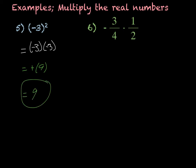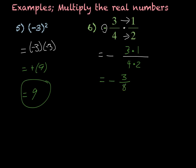For this next problem, we have negative 3 fourths times 1 half. Since there is an odd number of negative signs, my final answer is going to be negative. Multiplying two fractions, I multiply straight across: 3 times 1 over 4 times 2. 3 times 1 is 3, and 4 times 2 is 8, giving me negative 3 eighths as my answer.